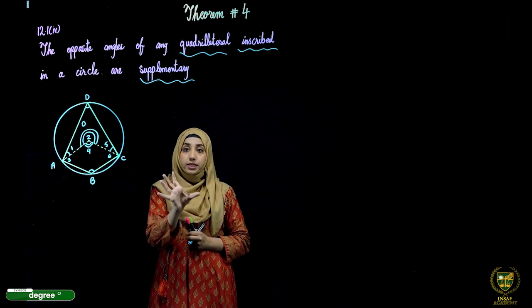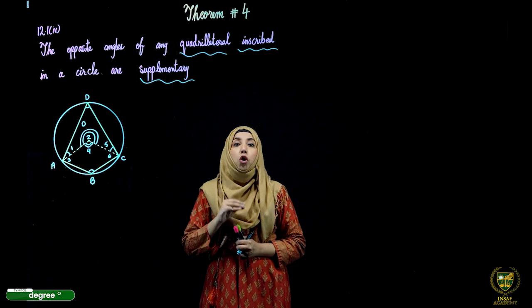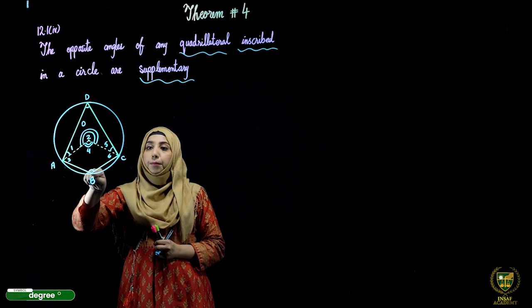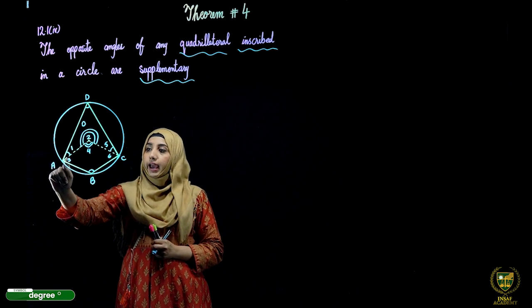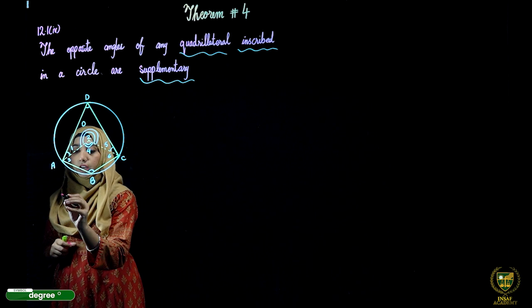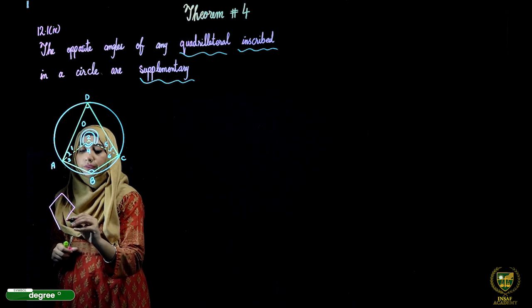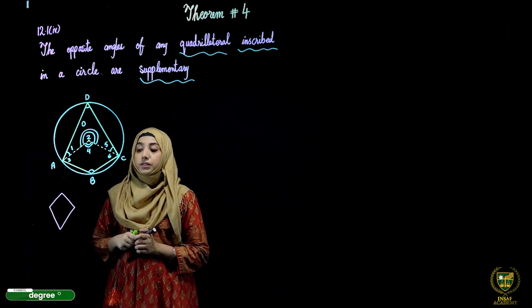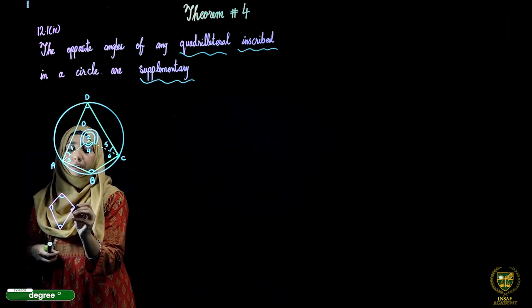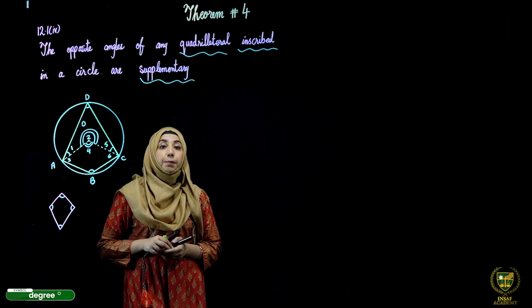We have been told about opposite angles of a quadrilateral. What we have to prove is that the opposite angles are 180 degrees. The opposite angles are: angle B and angle D, angle at A vertex and angle at C vertex. A quadrilateral is a figure with four sides and four vertices. The opposite of this angle is that angle, and we need to prove these two pairs are supplementary.